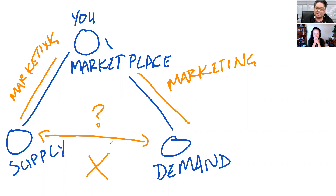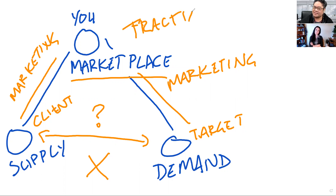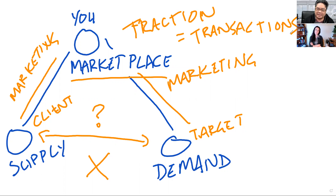How do you market supply and demand to each other? That's the thinking you have to go into — you have to become a marketing company. Your traction will be measured upon transactions. An investor is going to want to see your metrics based on transactions, not based on how many suppliers or customers you have, because simply listing both sides doesn't solve the marketplace problem.